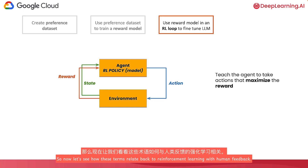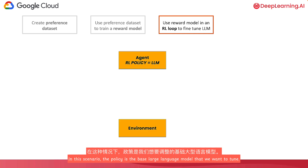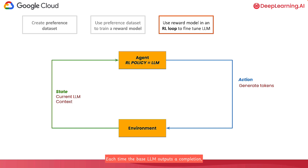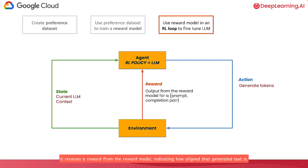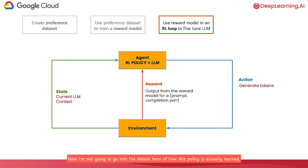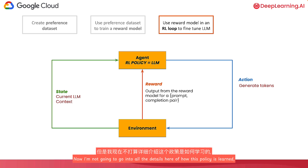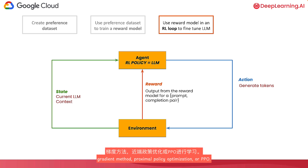So now let's see how these terms relate back to reinforcement learning with human feedback. In this scenario, the policy is the base large language model that we want to tune. The current state is whatever is in the context — the prompt and any generated text up until this point — and actions are generating tokens. Each time the base LLM outputs a completion, it receives a reward from the reward model indicating how aligned that generated text is. Learning the policy that maximizes the reward amounts to a large language model that produces completions with high scores from the reward model. In RLHF, the policy is tuned via the policy gradient method — proximal policy optimization, or PPO — which is a standard reinforcement learning algorithm.